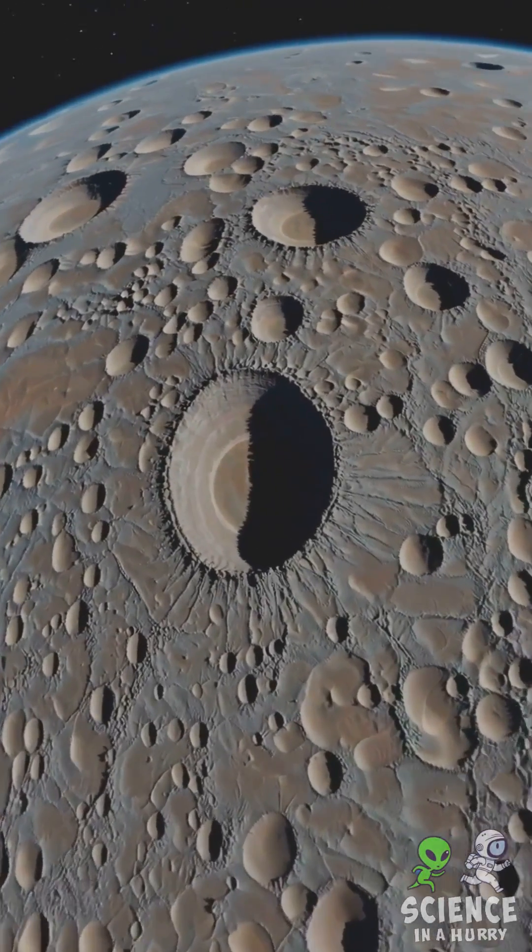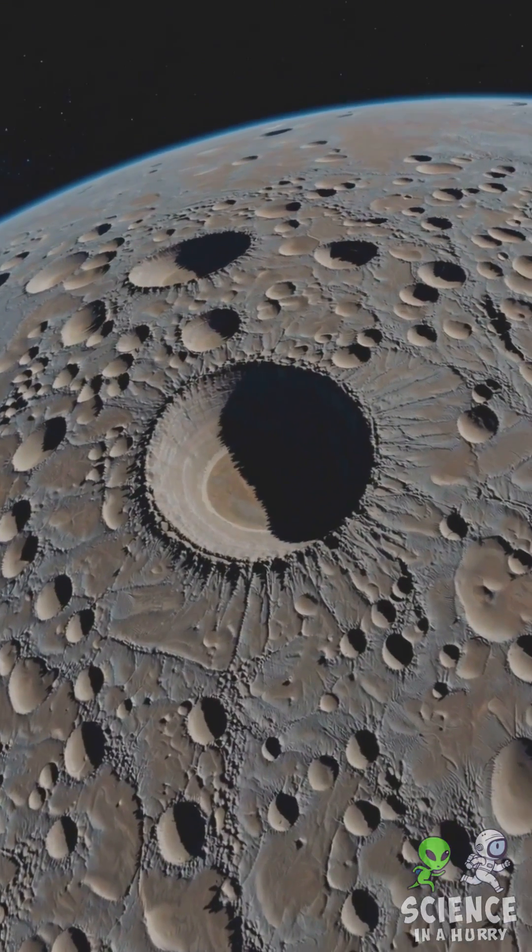With a cratered surface resembling our Moon, it's a time capsule of the early solar system.